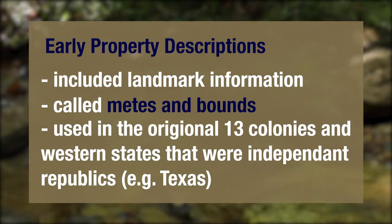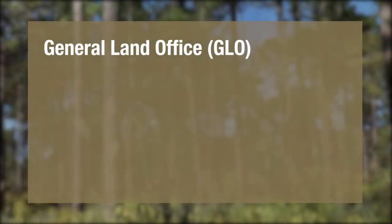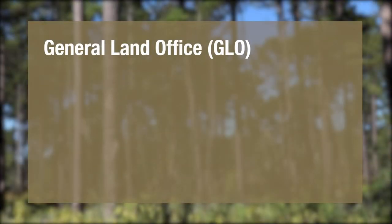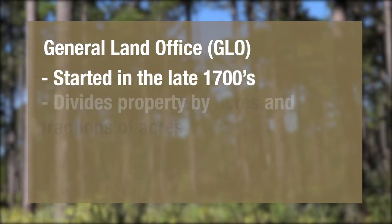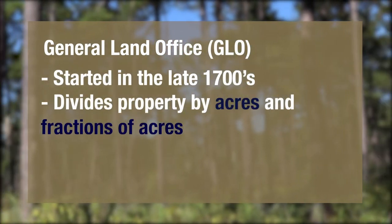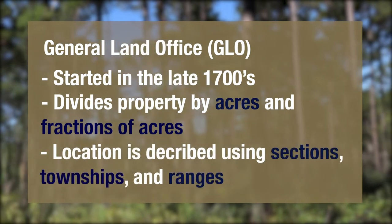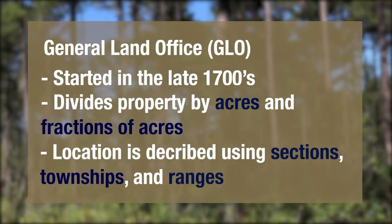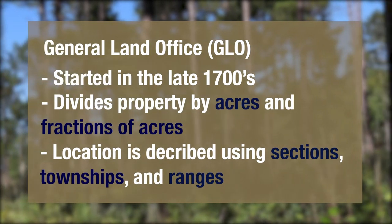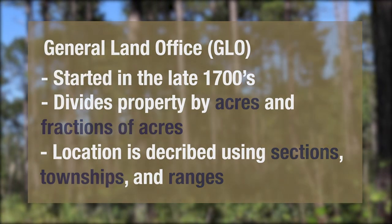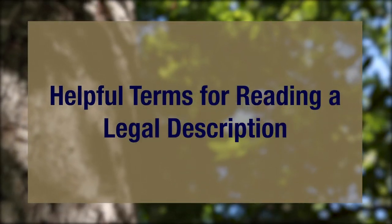In other parts of the United States, land is described using the General Land Office, or GLO, system of land division. The GLO system, started in the late 1700s, divides property into acres and fractions of acres, and location is described using sections, townships, and ranges. Reading or reporting the legal description using the GLO township and range system can be a little confusing at first, but with some practice it can start to make sense.